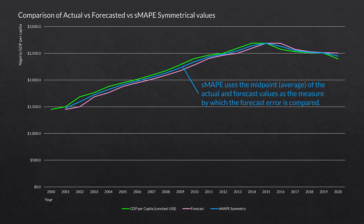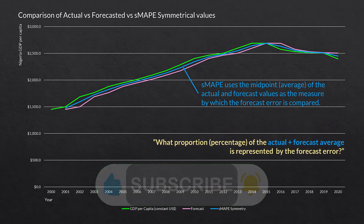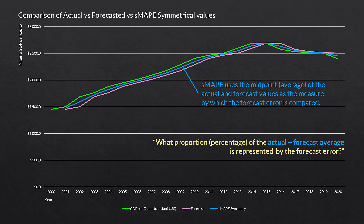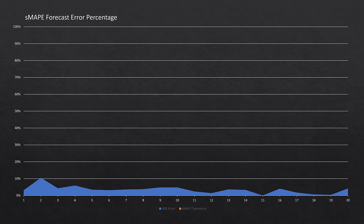SMAPE uses the midpoint, or the average, of the actual and forecast values as the measure by which the forecast error is compared. What we're saying is: what proportion or percentage of the actual-plus-forecast average — that midpoint — is represented by the forecast error? The forecast error goes on top and the midpoint or average of actual and forecast values goes on the bottom. Looking at the area graph, we can see that on the second period where we had actual and forecasted values, our absolute error peaked at around 10%.